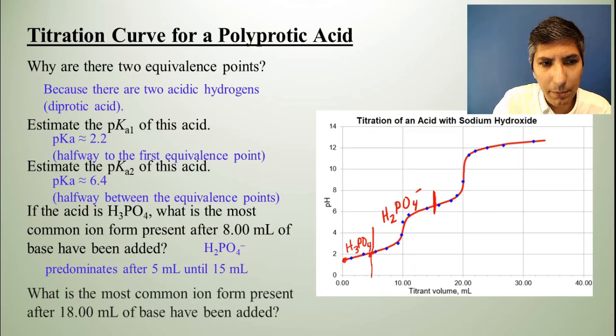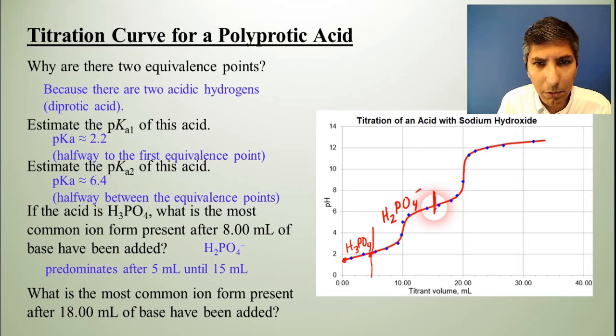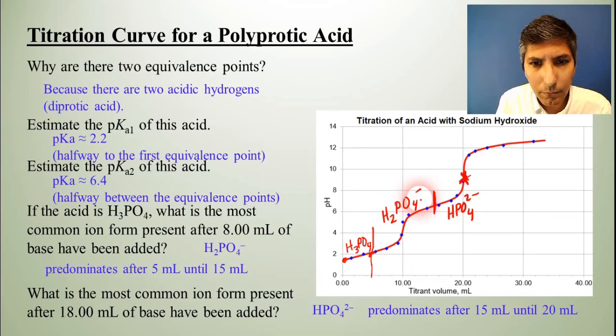Now what's going to predominate after that point? Let's say we're asking about the 18 milliliter point. Well, from this point right here, that second halfway point, up until the equivalence point right around here, what's going to predominate is the next form that's been taken off, HPO4 2 negative. And that's what's going to predominate from the 15 milliliter up until 20 milliliter.